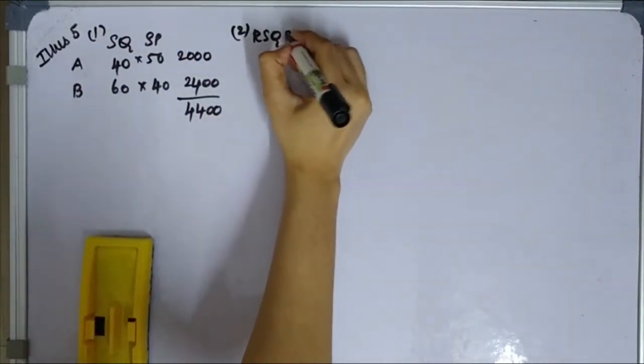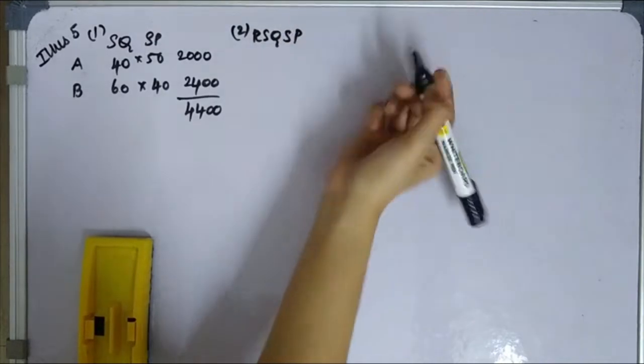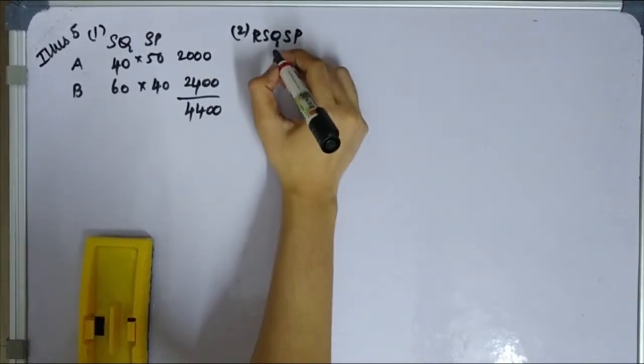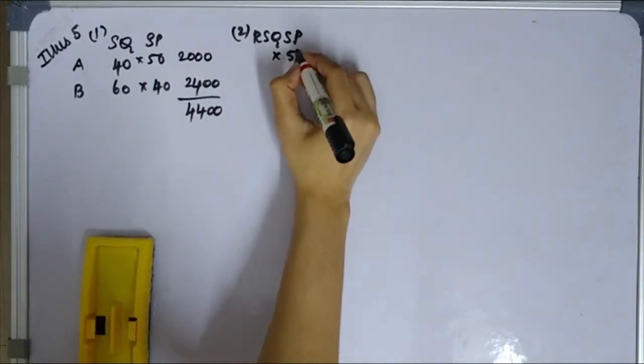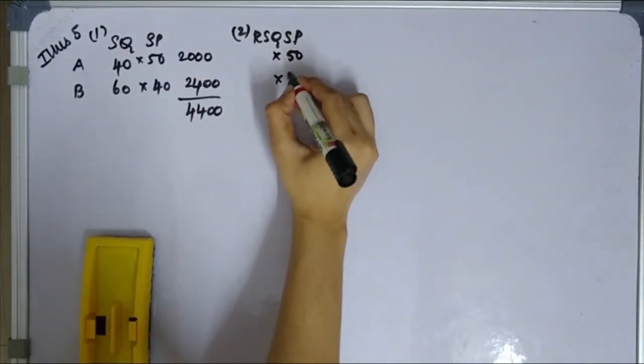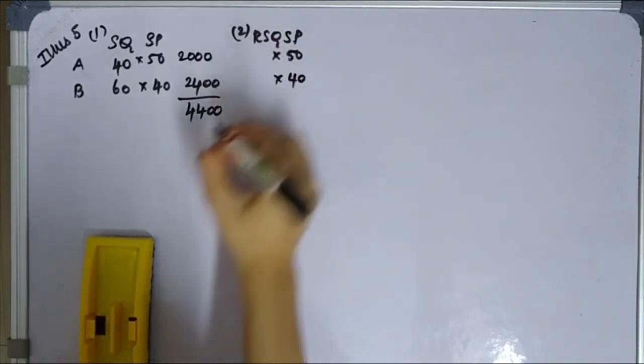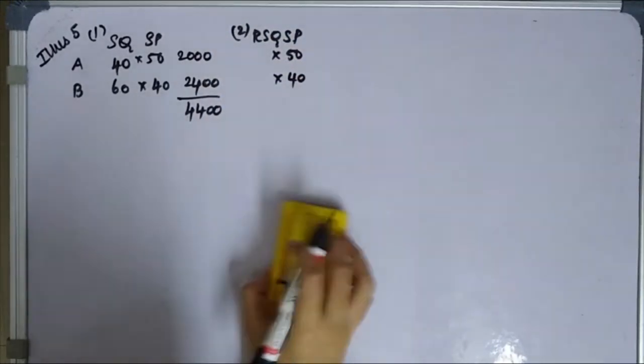Second column: RSQ×SP. Standard price is 50 for A and 40 for B. RSQ for A is 50.